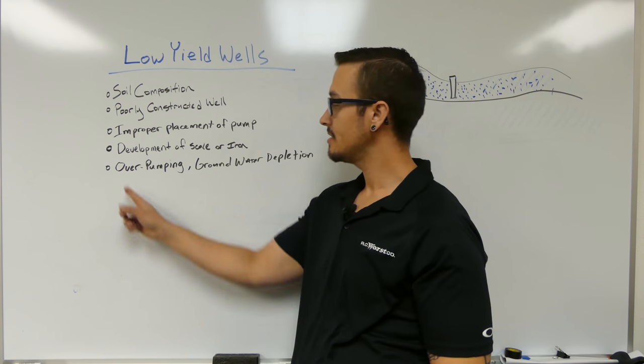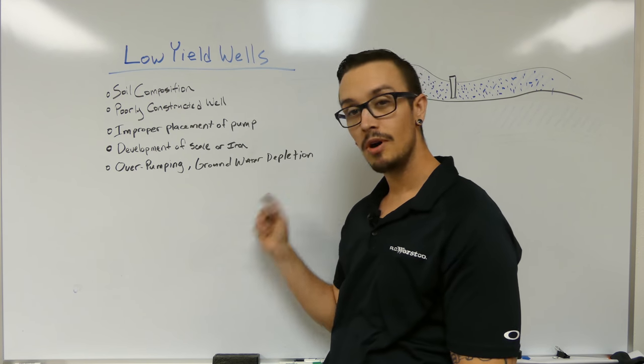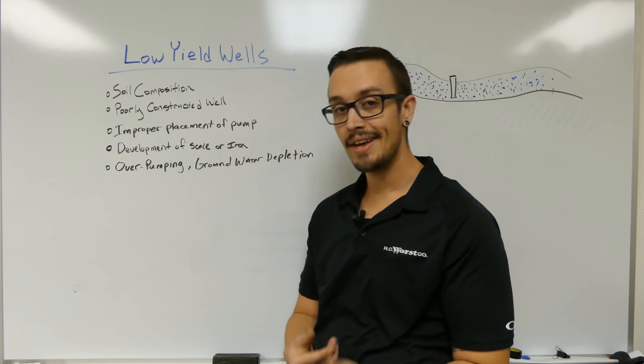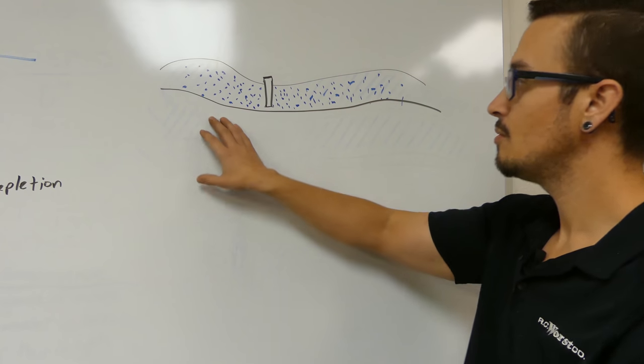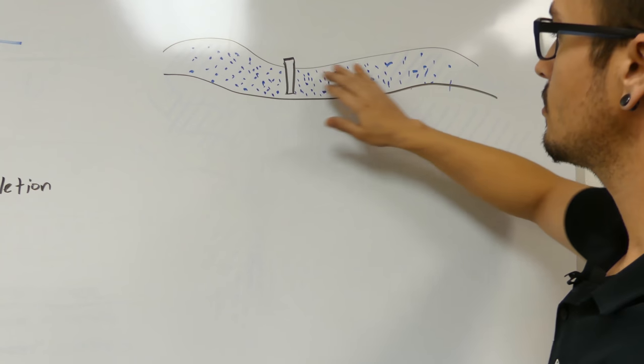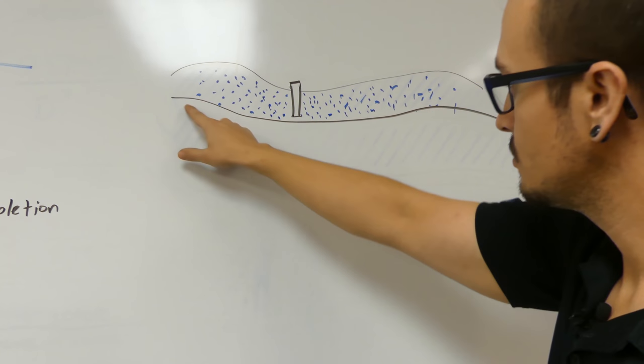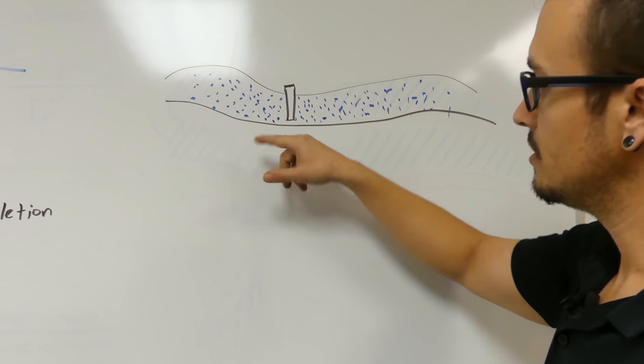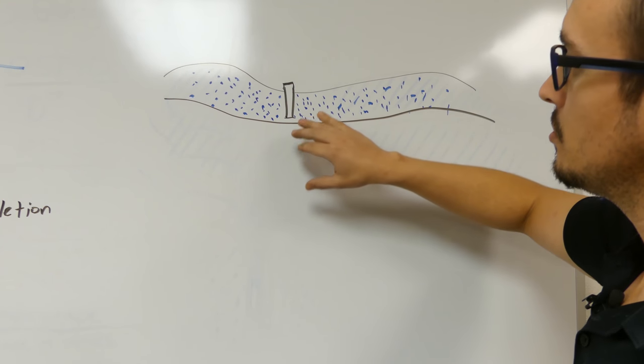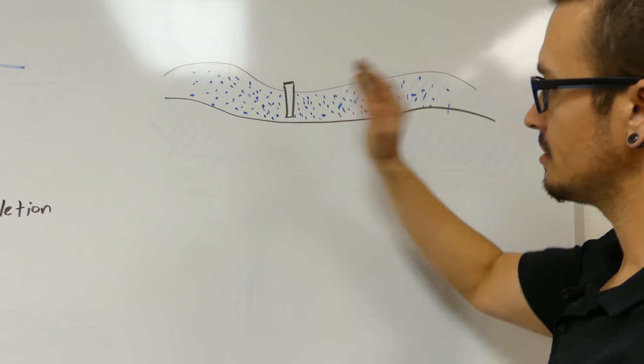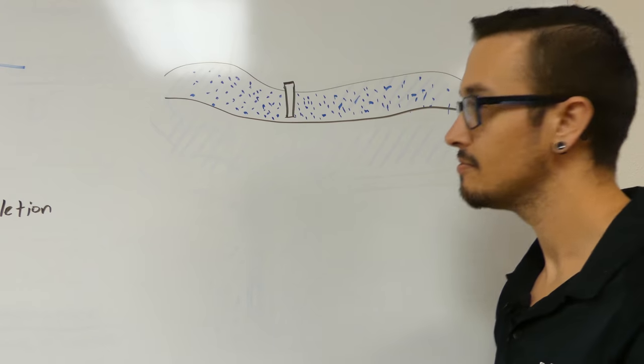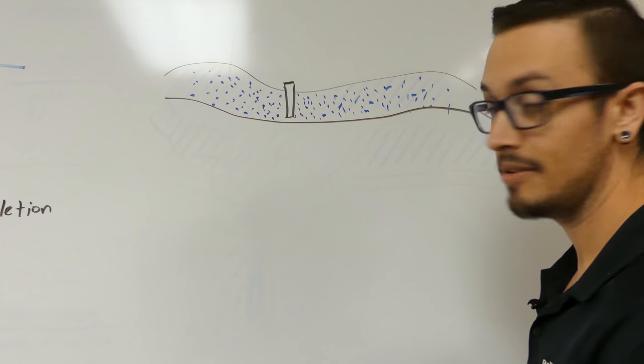All right. So the last one on the list for today is over pumping, comma, groundwater depletion or and groundwater depletion, kind of the same thing. So let's just talk about what that is over here. Okay. So we've got this drawing here. Once you probably recognize these at this point. So this would be our aquifer level. This would be our ground level. And then this would just be a separating layer of soil between the two layers. So and then of course, we've got a well here.